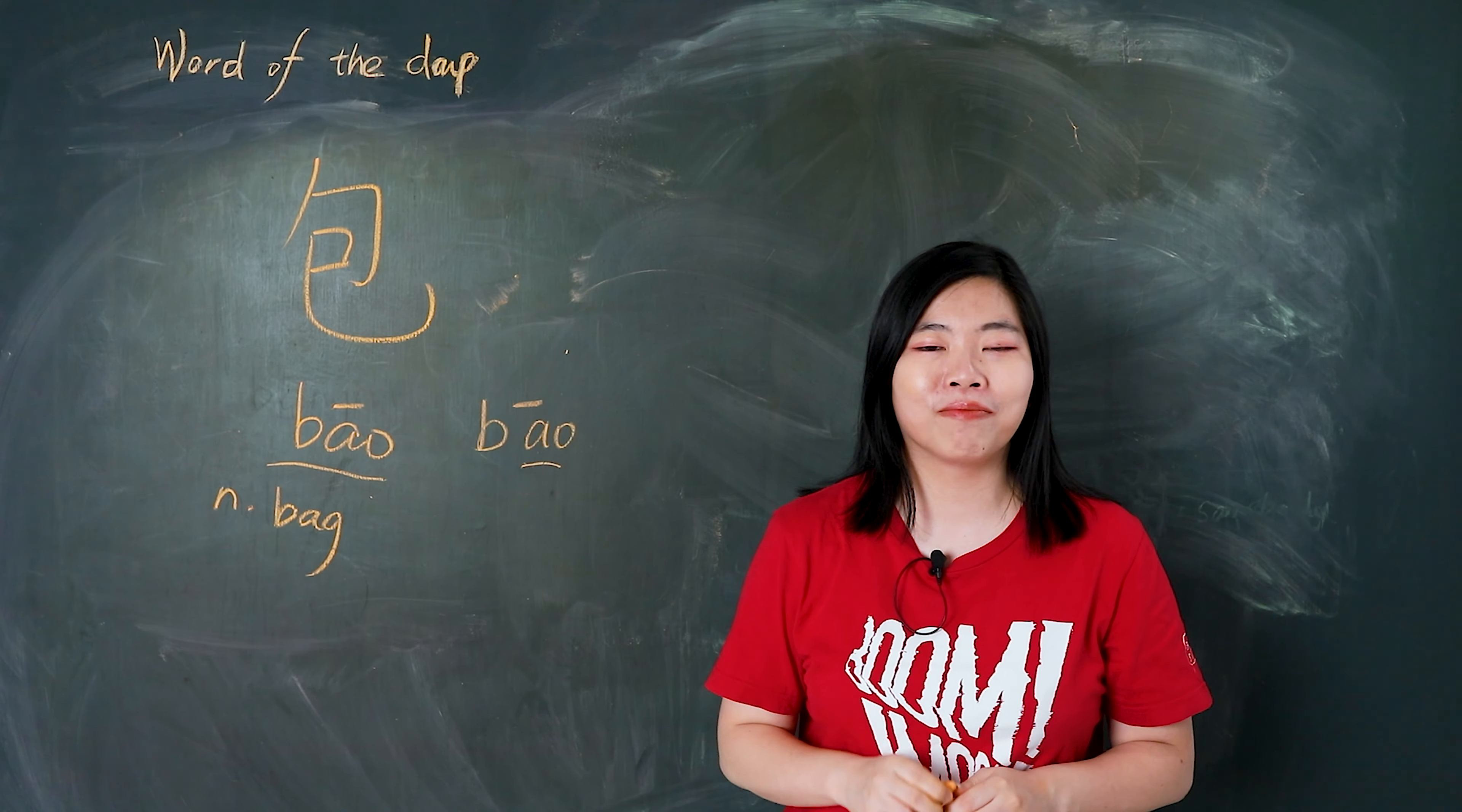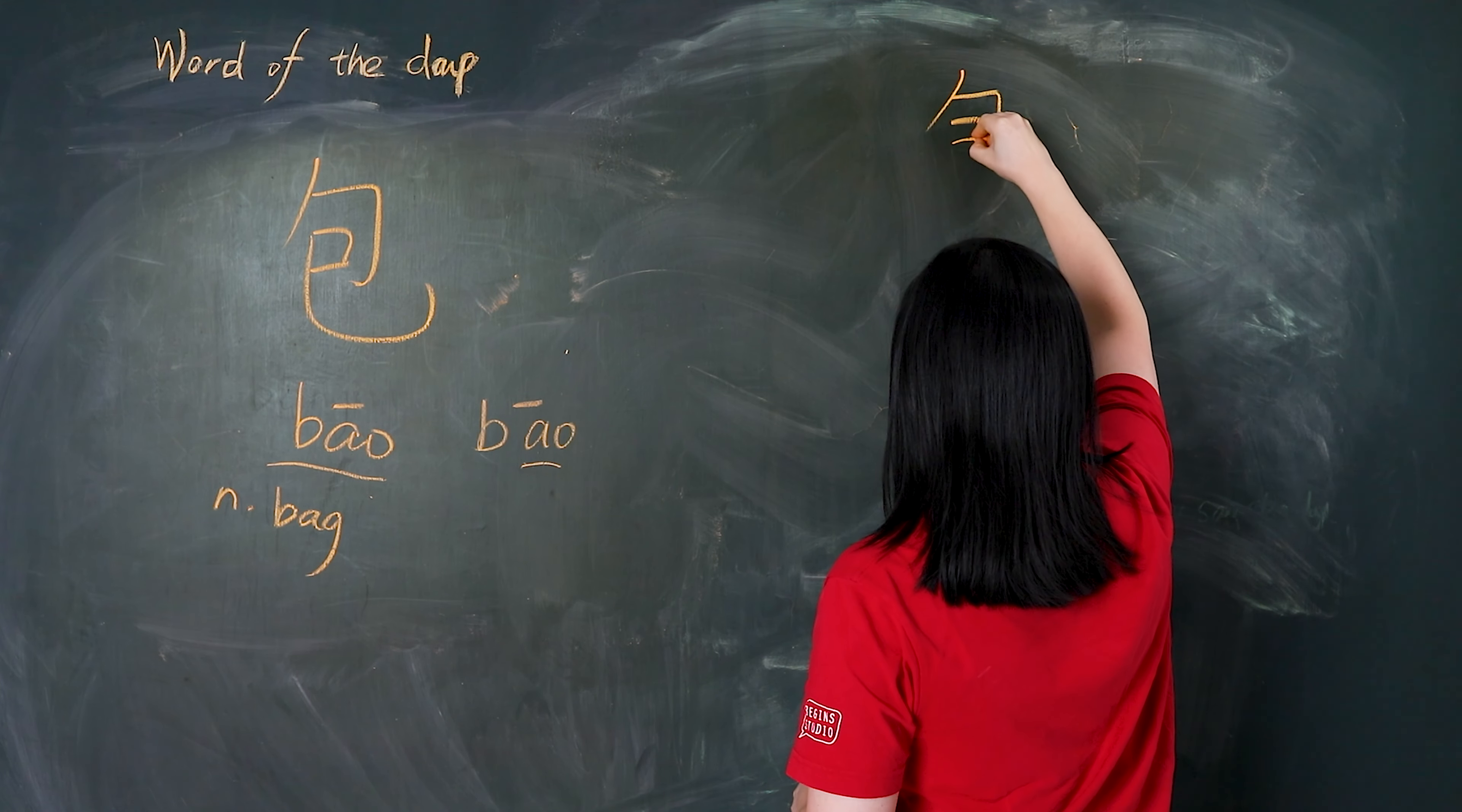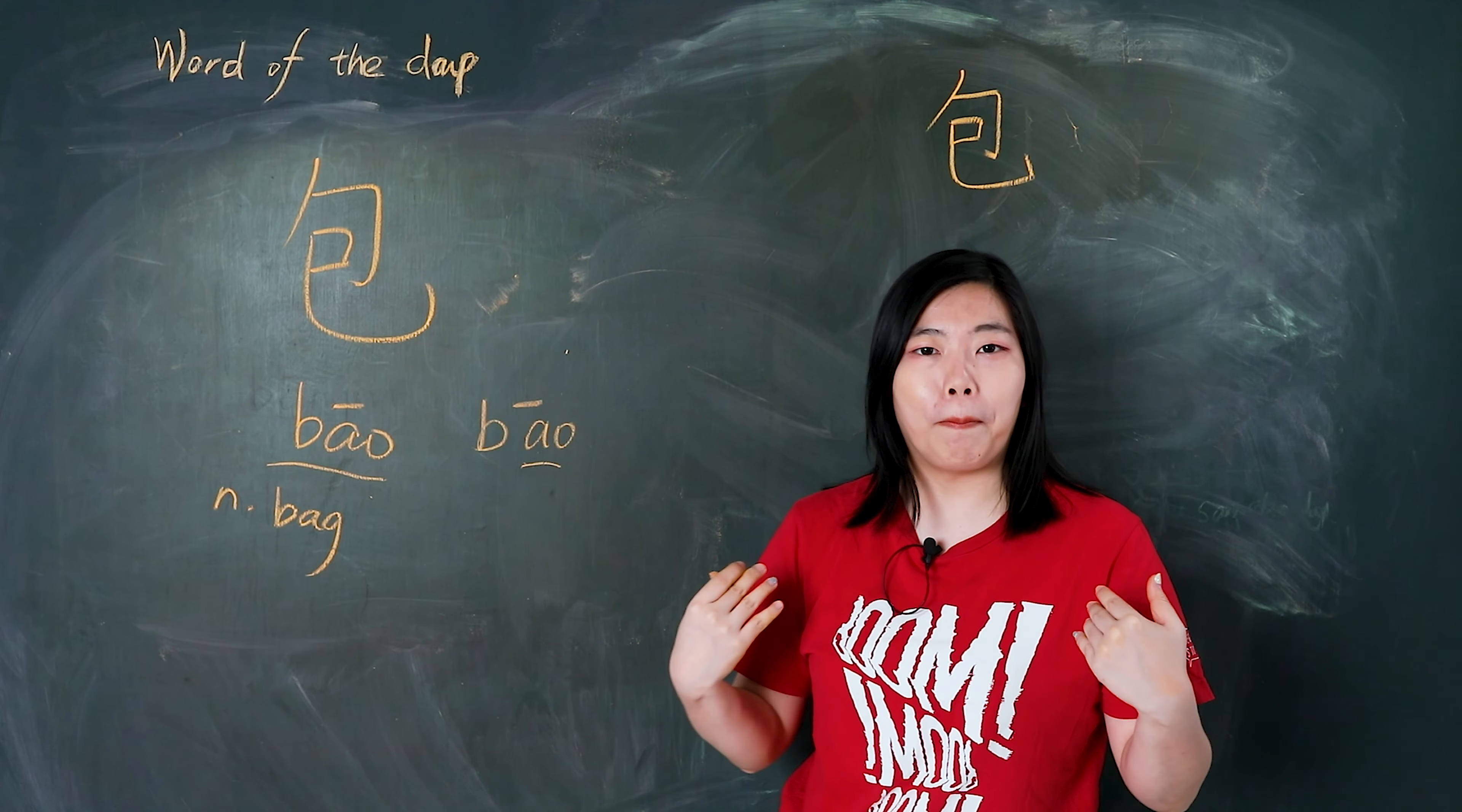Now let's write it. 我们一起写. 撇, 横折, 横折, 横, 竖弯钩. 包, 包, 包, 包, 包. My bag, 我的包.